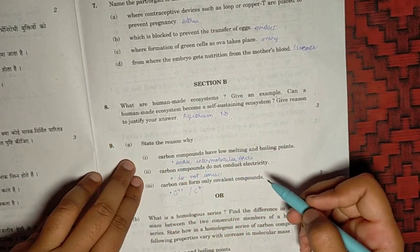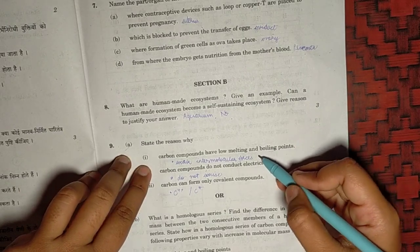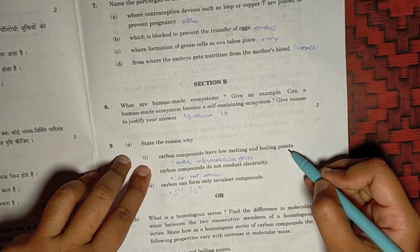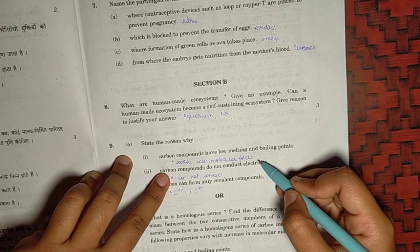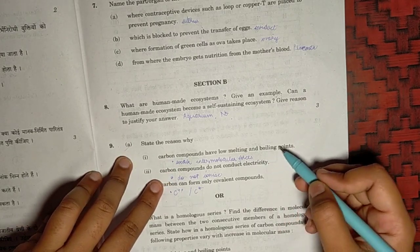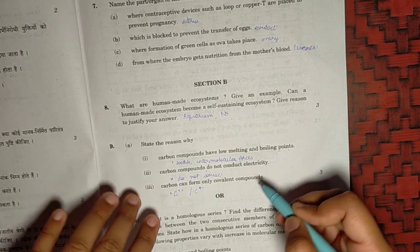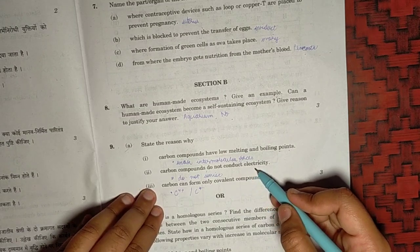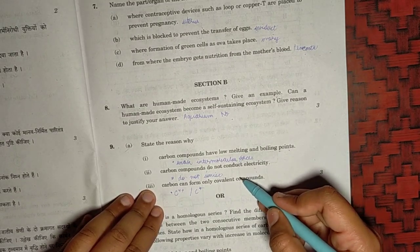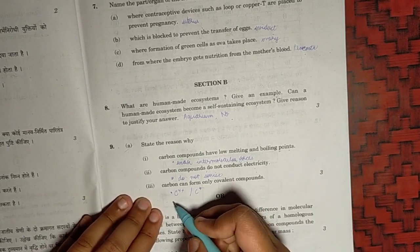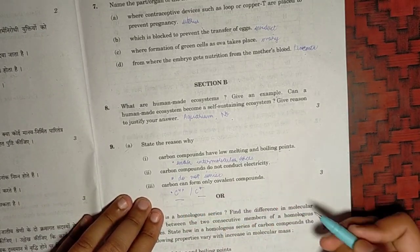For the ninth question, first part. Carbon have low melting and boiling point. Because though the bonds are strong, the intermolecular forces are weak. This causes the bonds to break easily. So they have less boiling and melting point. For the second one, they do not conduct electricity. Because they do not contain free electrons plus they cannot ionize. For the third one, you need to explain why C4 plus and C4 minus cannot be formed.